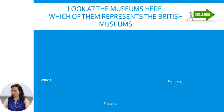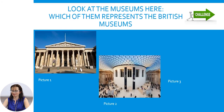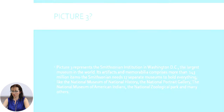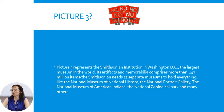Look at the museums here. Which of them represents the British Museum? A challenge for you — be attentive. Is it the first picture? The second picture? The third picture? Picture 3 represents the Smithsonian Institution in Washington DC, the largest museum in the world.